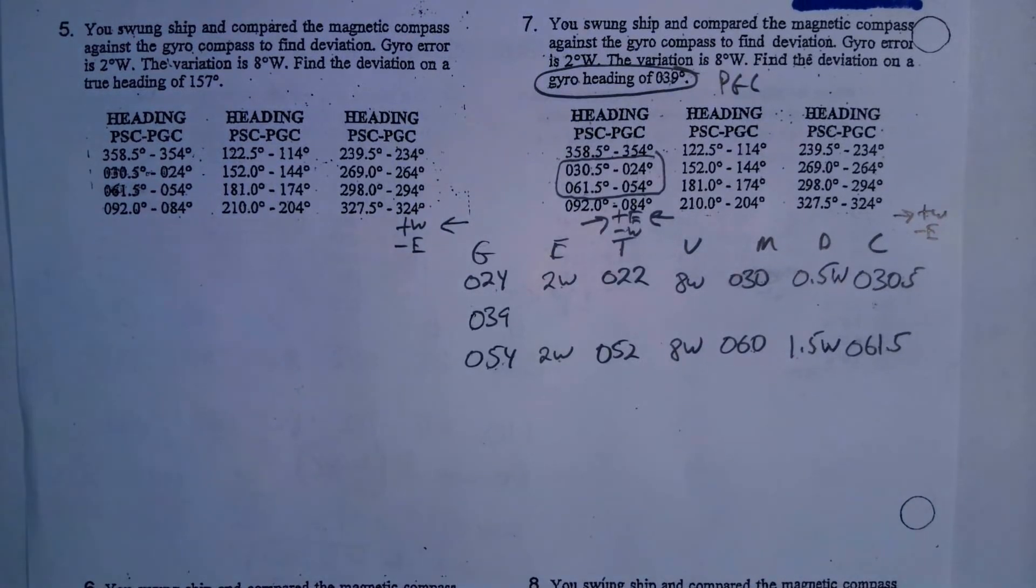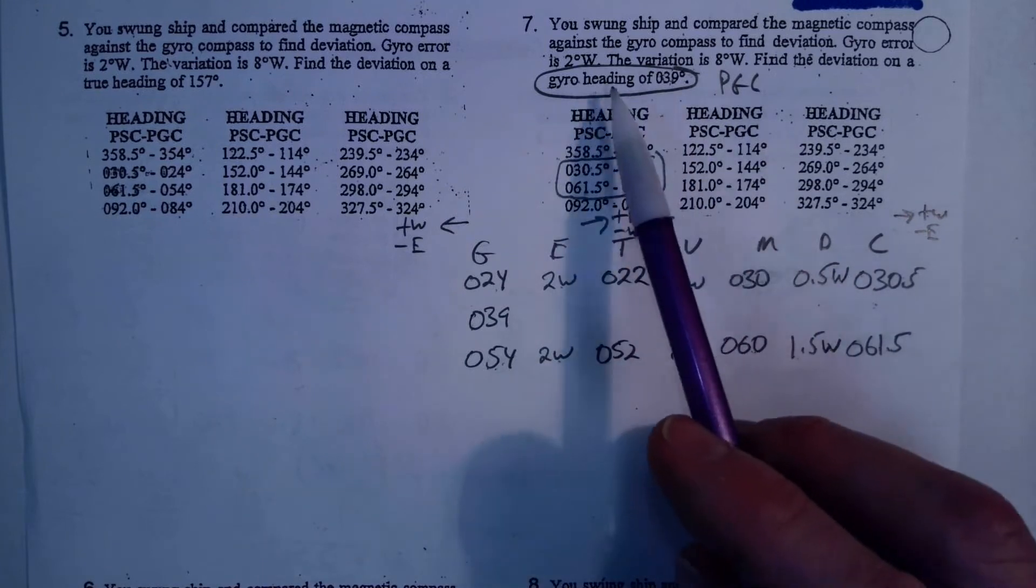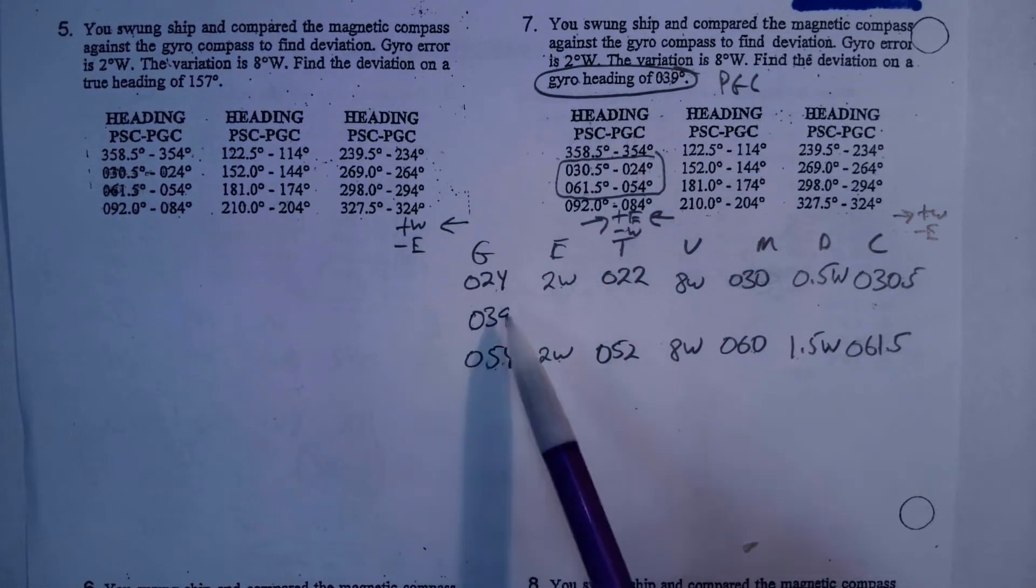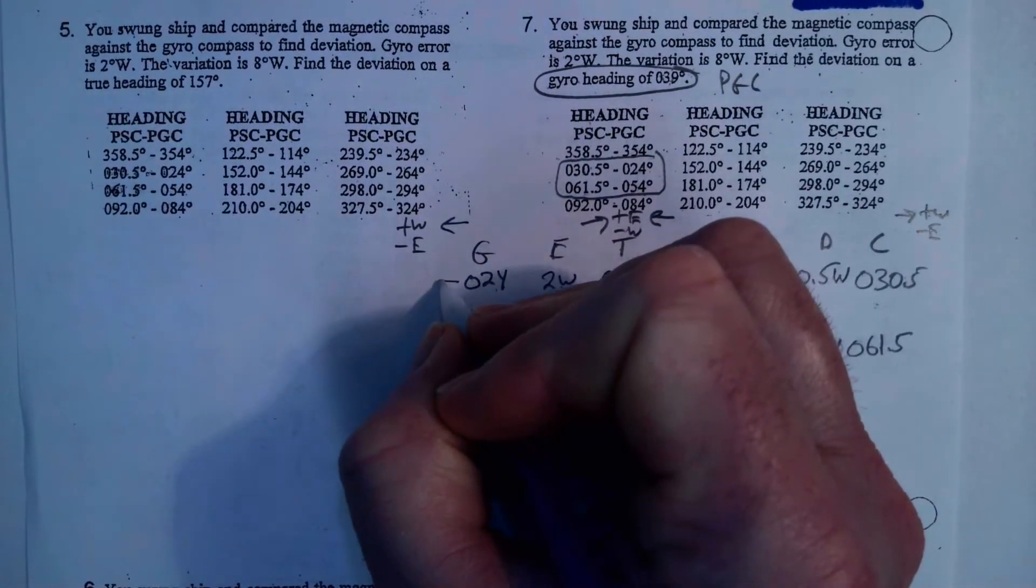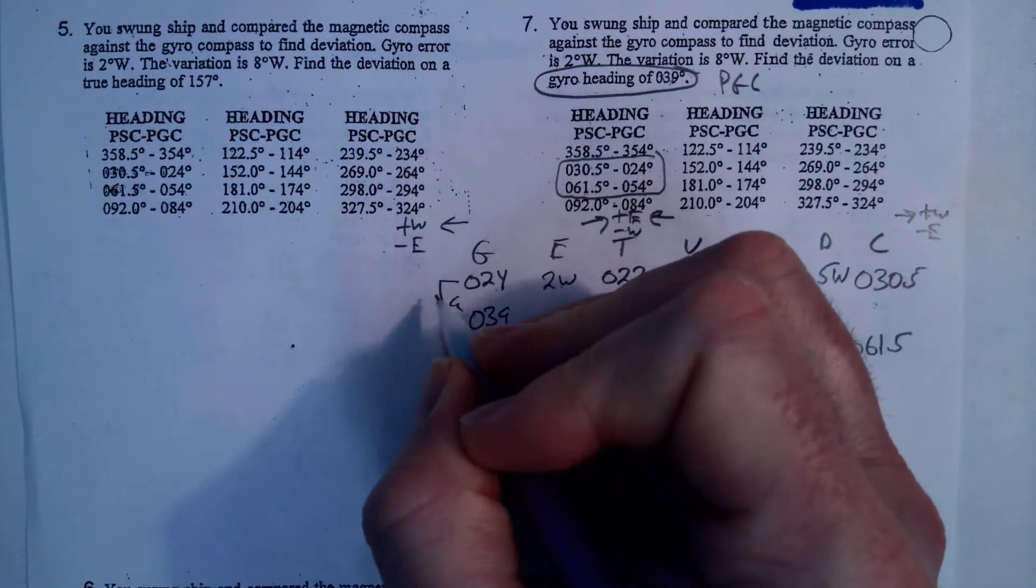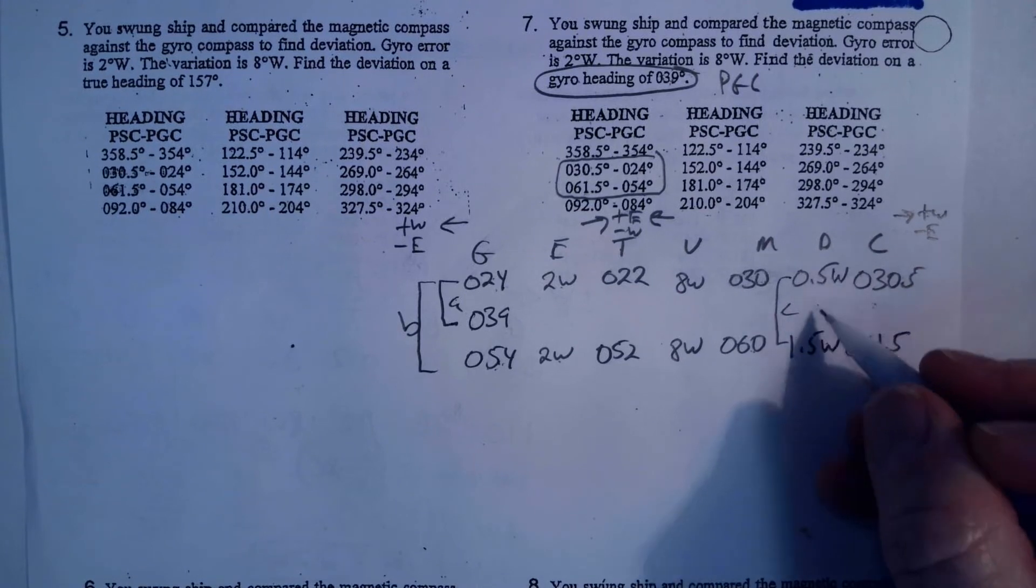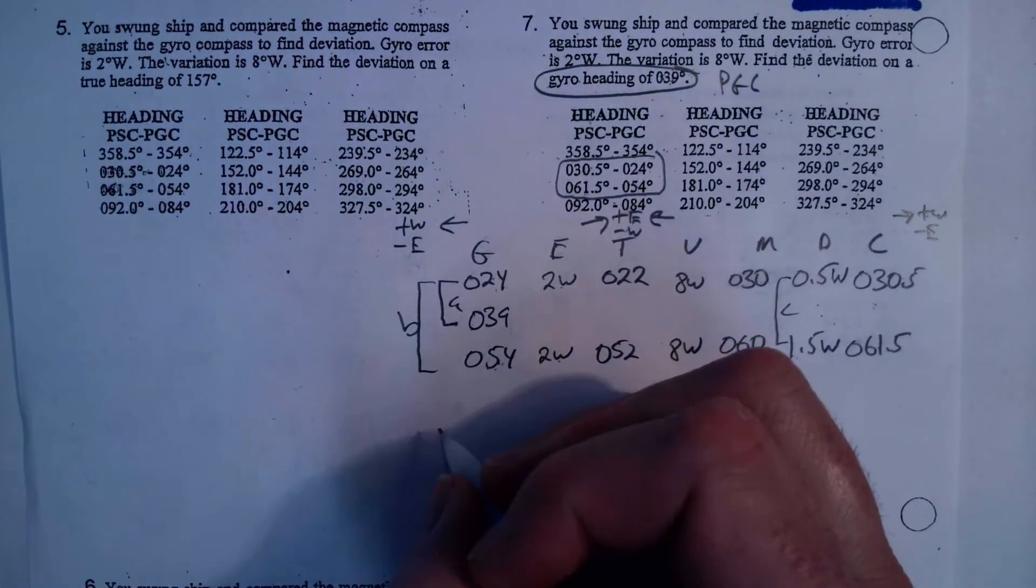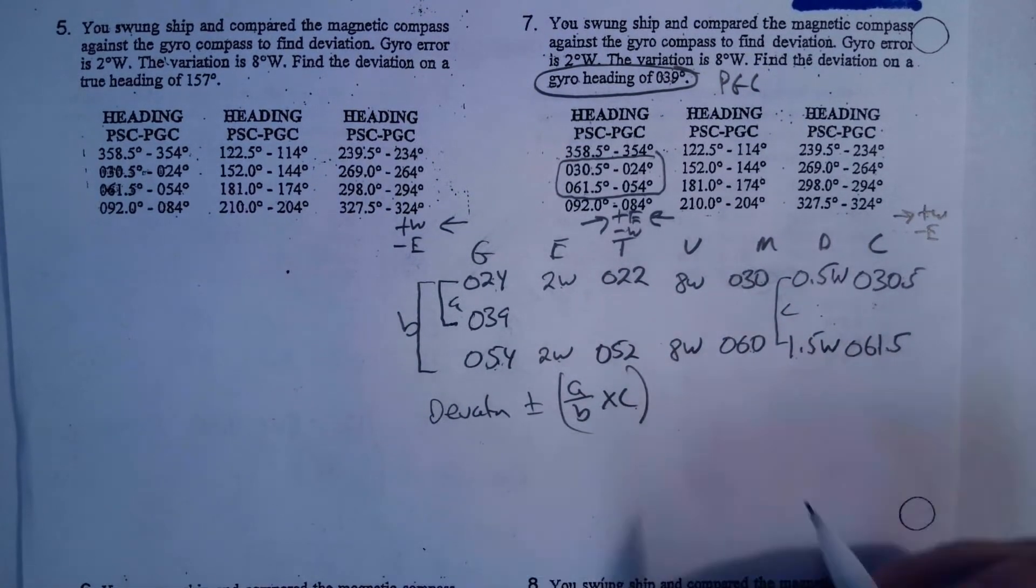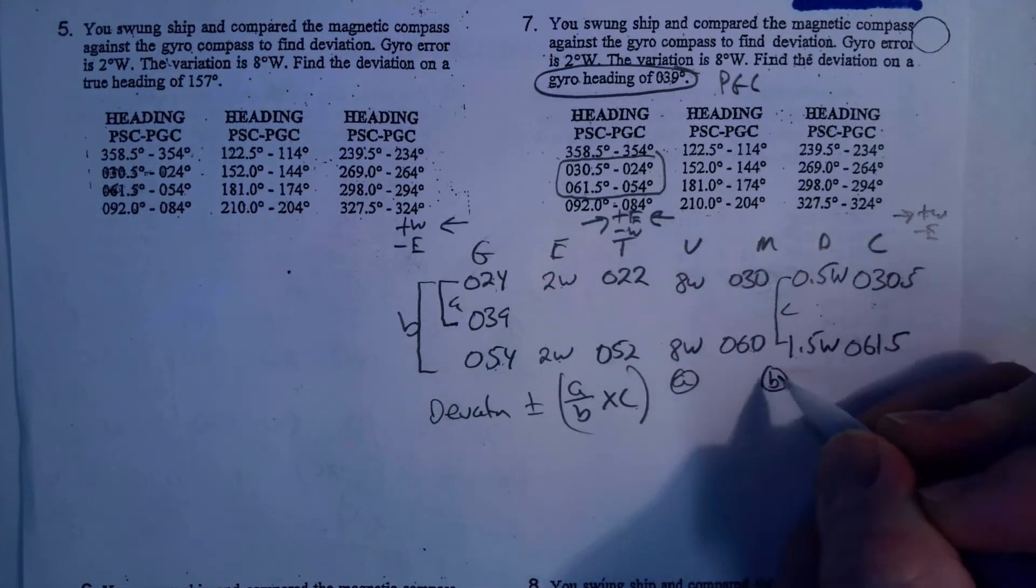Now, I'm going to set up my proportion. On the previous problem, we had done a PSC, and we set our proportions up on this side, because we were looking for a magnetic compass heading between these two. But now, we're given this 039, so I'm going to set my proportion up over here. So, A is going to be between the top number, 24, and 039, what I'm looking for, and that's going to be A, and B is going to be from 24 to 54. But C is going to be exactly the same. It's going to be the difference between the two deviations, just like it was in the previous problem. So, what's my formula going to be? It's going to be deviation plus or minus A over B times C. And, of course, by the rules of PEMDAS, I got to do these first before that.